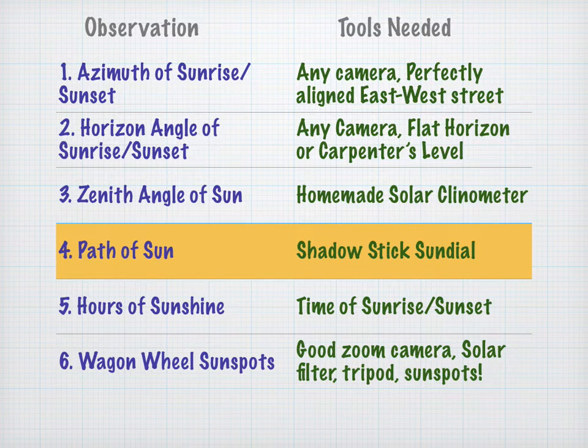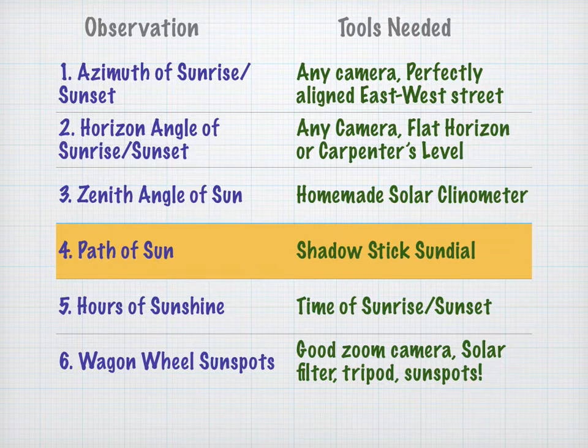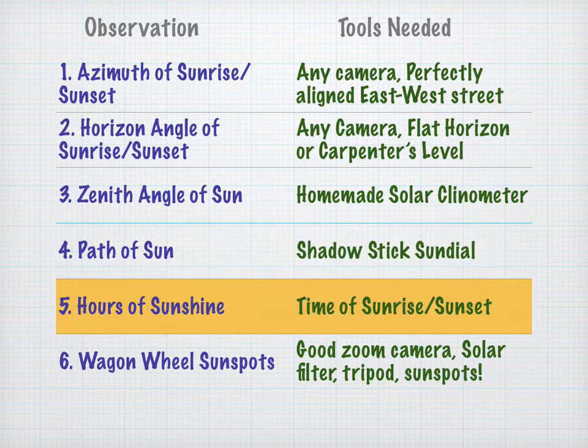You can also record the path of the Sun using a shadow stick sundial. All you need is a pizza box and a toothpick.